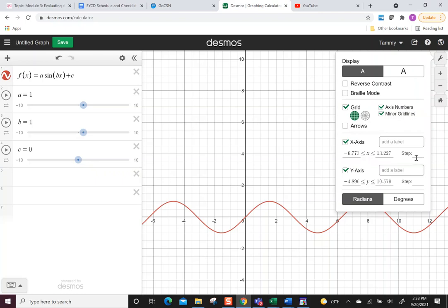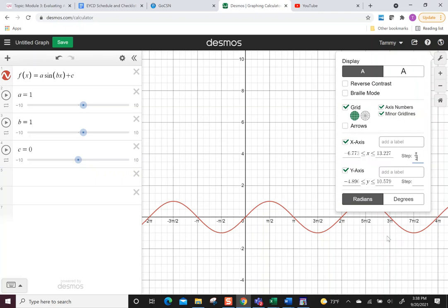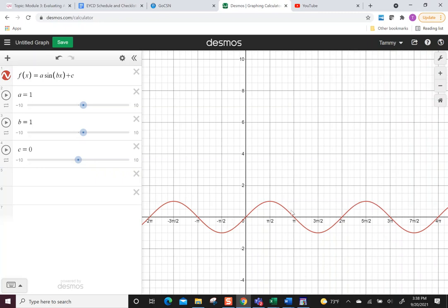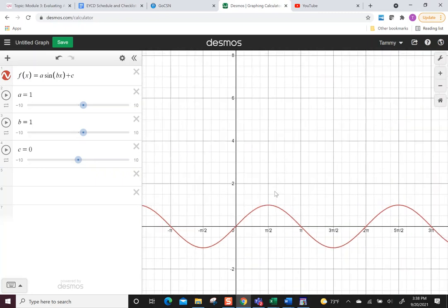It'll look a little better if I change the step for the x to pi over 2. Notice I just type pi, it does pi. And then you can see these nice, like what's happening when. You can zoom in if you want.